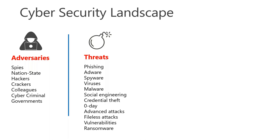When I'm prioritizing threats, I'm trying to do the math on what is the most likely way an attacker is coming in the door. Phishing is at the top of that list because it's the number one threat in most environments. A survey done a few years ago said more than nine out of ten breaches start with a phishing or spear phishing attack — they're coming in the door via email.